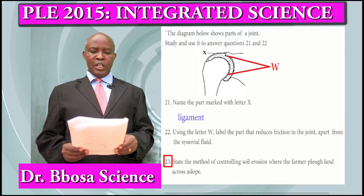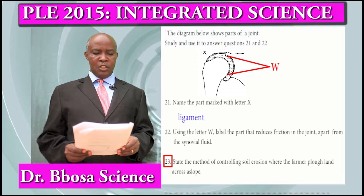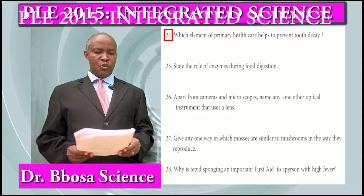Question 23: State the method of soil conservation where a farmer plows land across the slope. That is contour plowing.